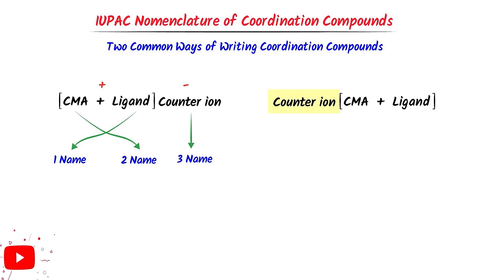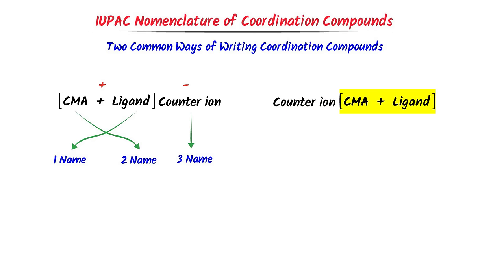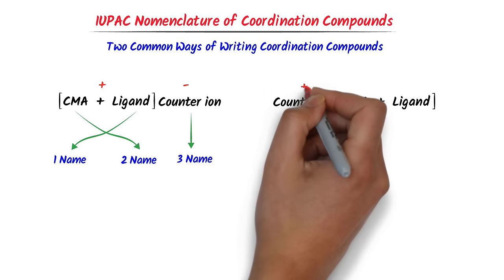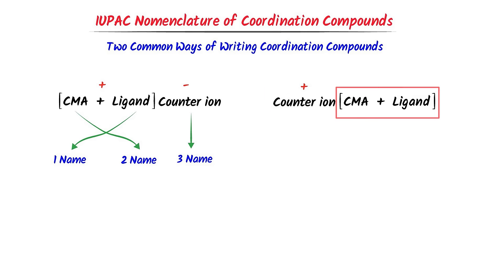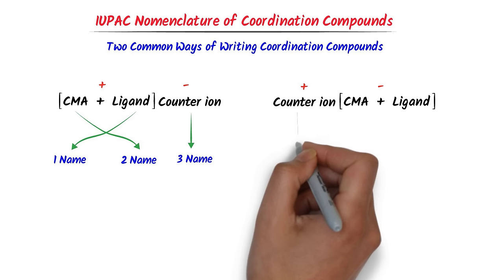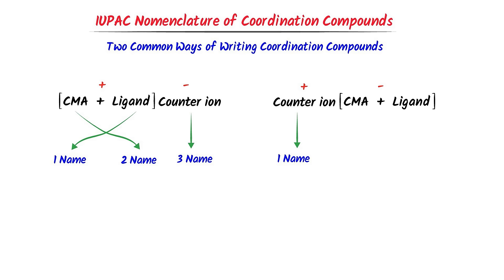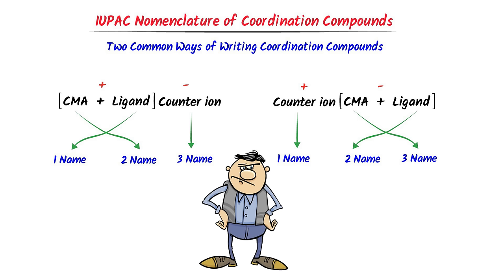While in this case, the counter ion is present at the left-hand side and the coordination sphere is present at the right-hand side. As usual, the left-hand side is always considered to be the positive charge and the right-hand side is always considered to be the negative charge. According to the rules, we firstly name the counter ion, then in the coordination sphere we name the ligand, and lastly we name the central metal atom. These are the two most common ways to write coordination compounds and we will follow these two patterns to name any coordination compound.